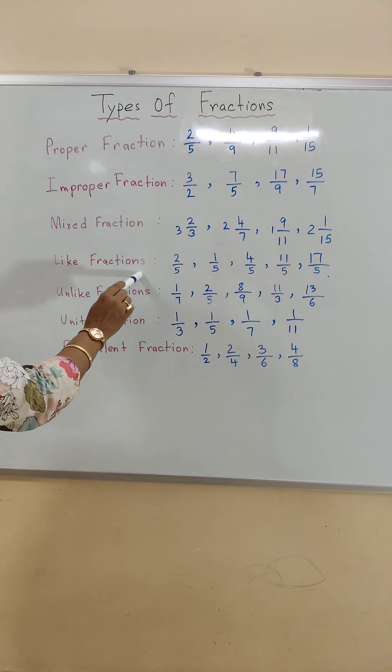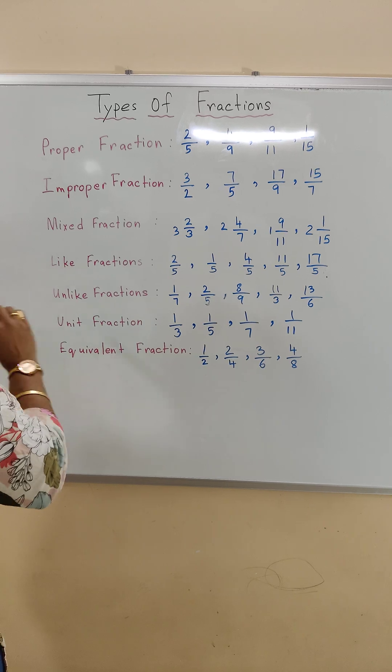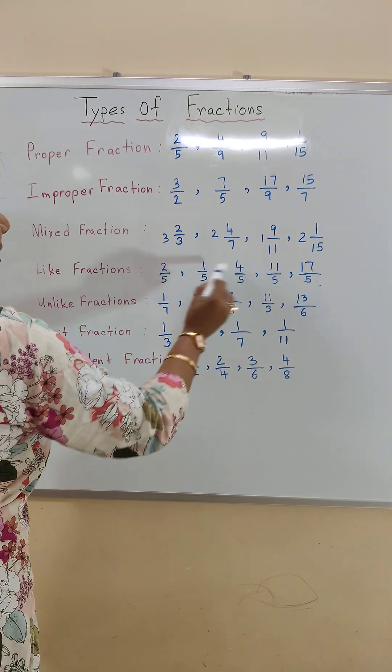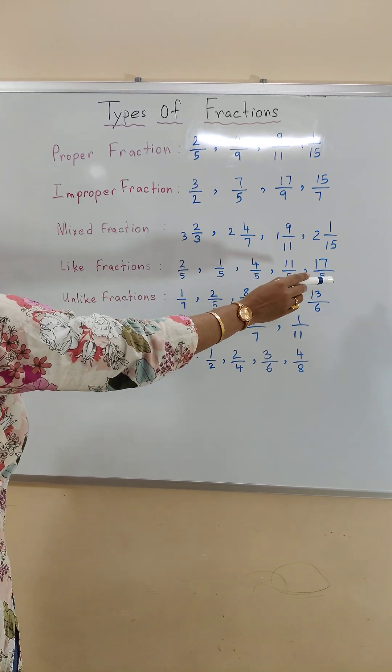Number four, like fractions where we see all the denominators are the same. See, 5, 5, 5, all the numerators are the same of the given fractions.